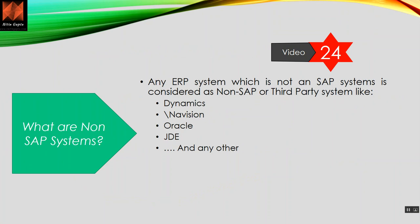First, let's understand what non-SAP systems are. We generally call them non-SAP or third-party — these terms are used interchangeably because SAP classifies everything as third-party which is non-SAP. Any ERP system that is not an SAP system is considered non-SAP or third-party, such as Dynamics, Navision, Oracle, JD Edwards, or any other system in the technology area.